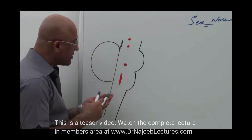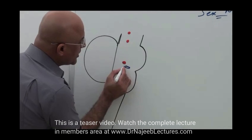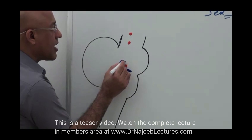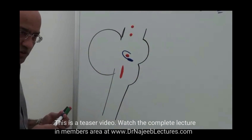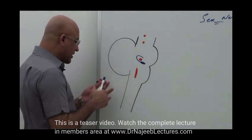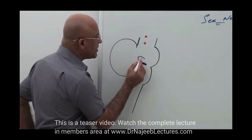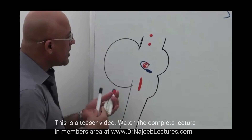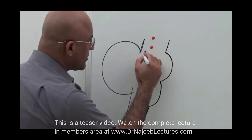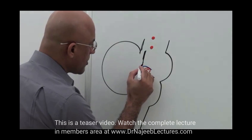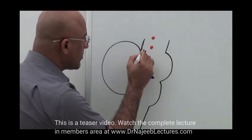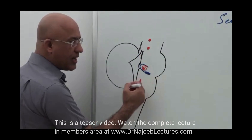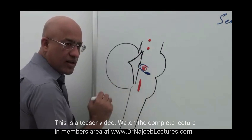If I show you the seventh cranial nerve — the main facial nucleus is here, and its fibers turn backward and turn around the nucleus of the abducent nerve. This is the sixth cranial nerve nucleus, around which seventh cranial nerve fibers are going. Here is your fourth ventricle — this is the floor of the fourth ventricle, and this is the roof of the fourth ventricle.